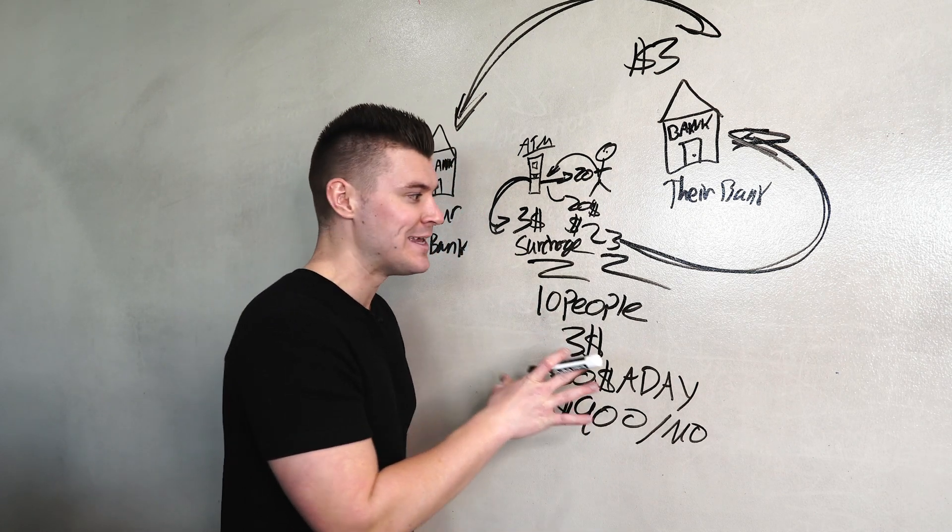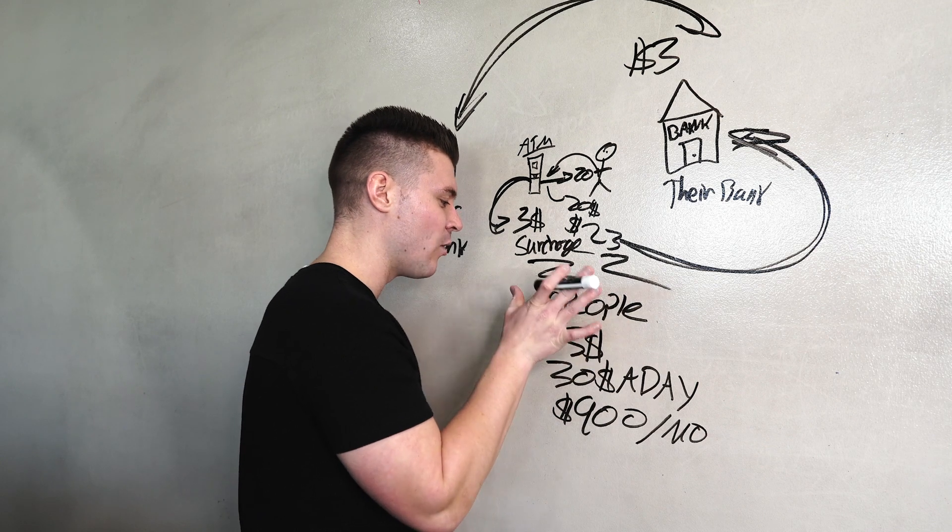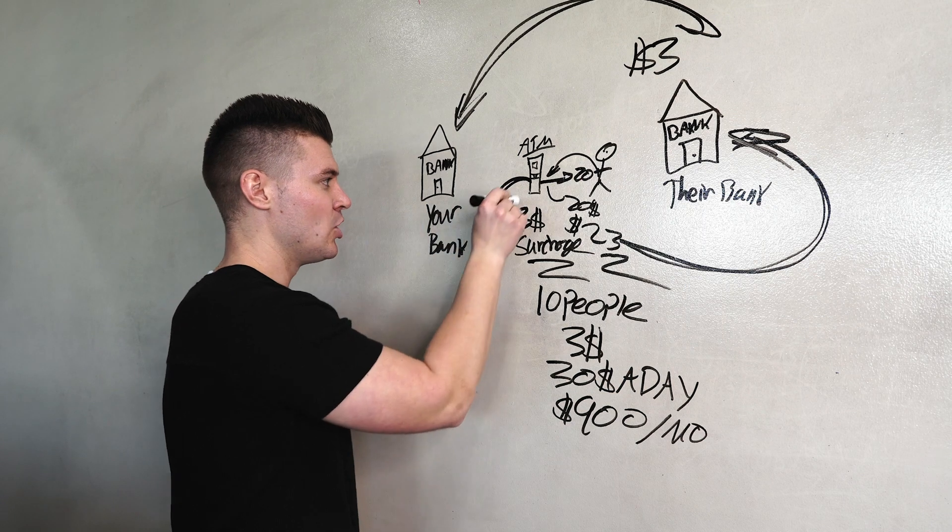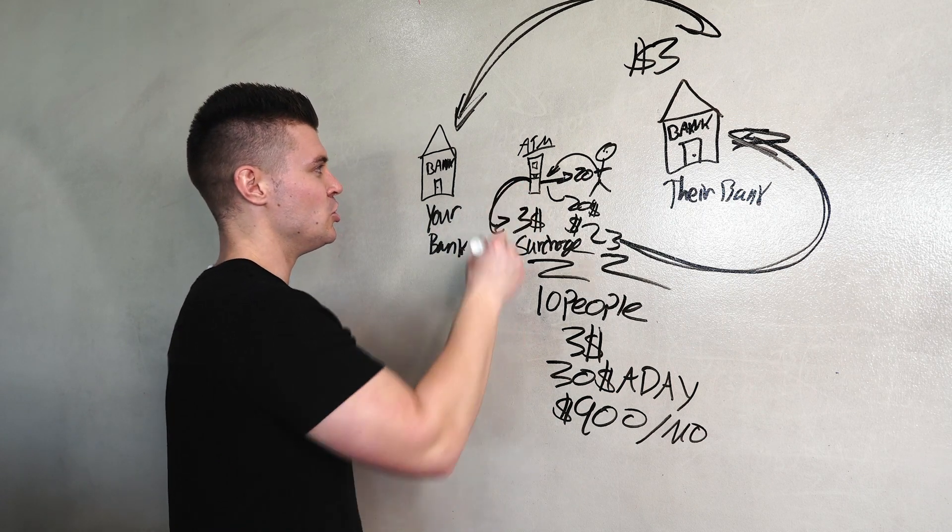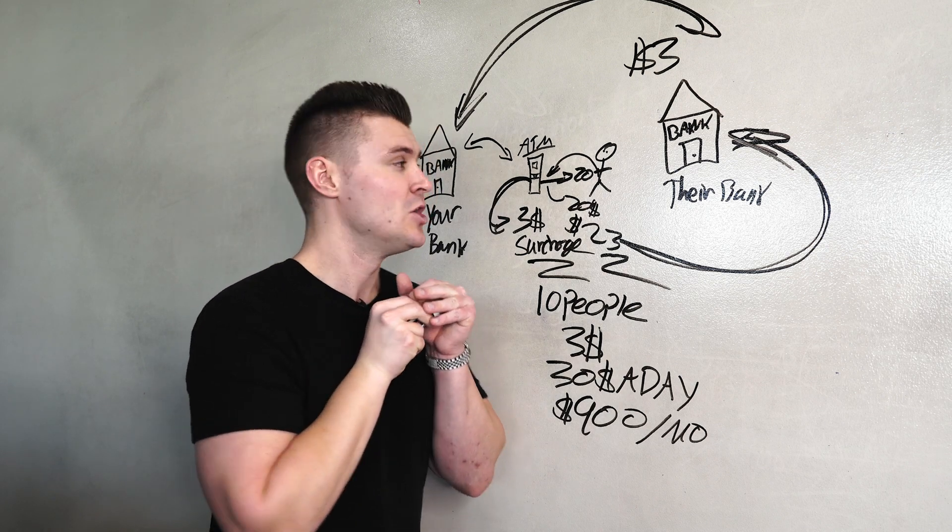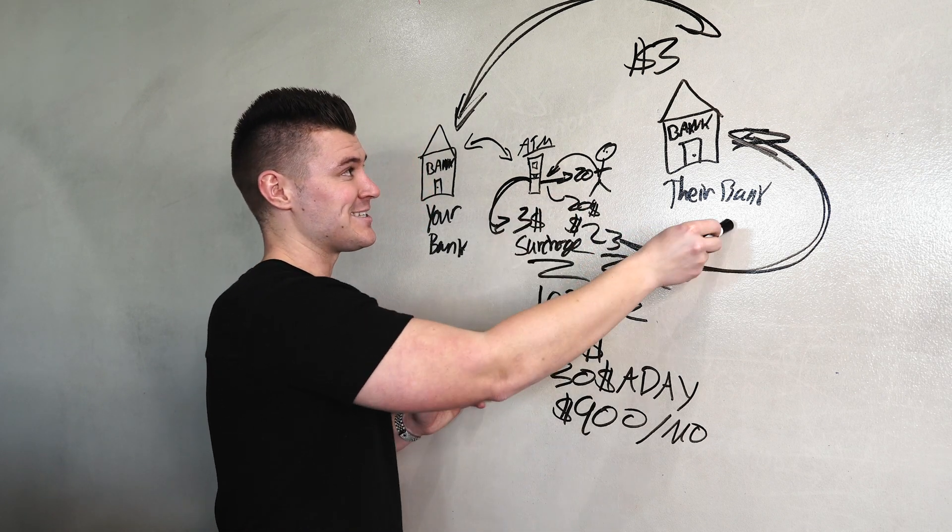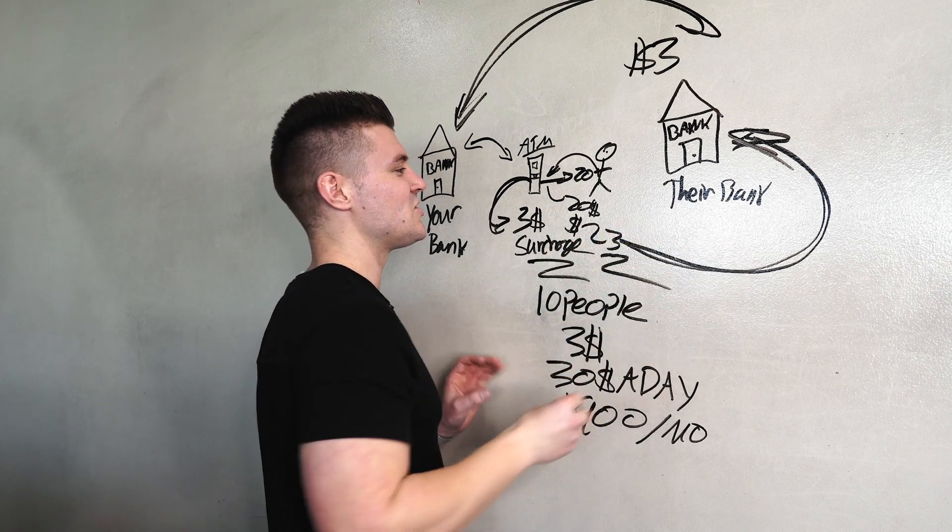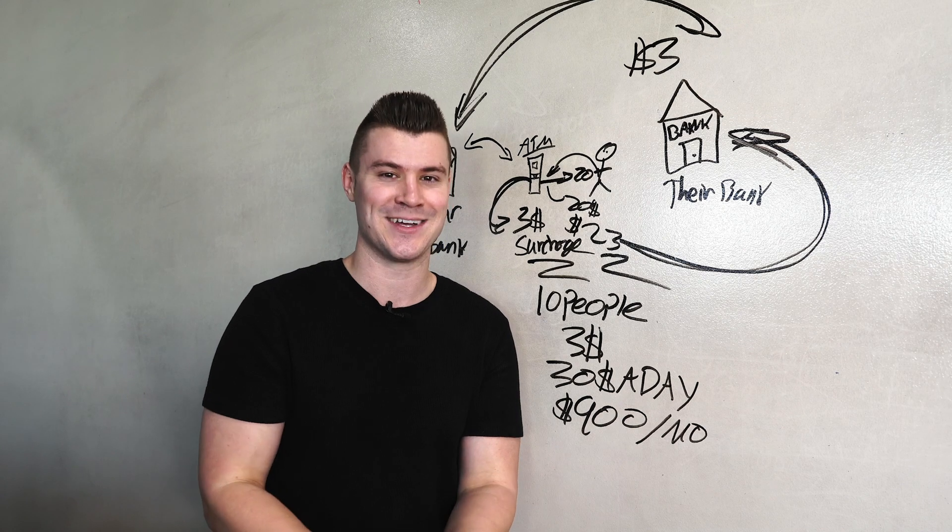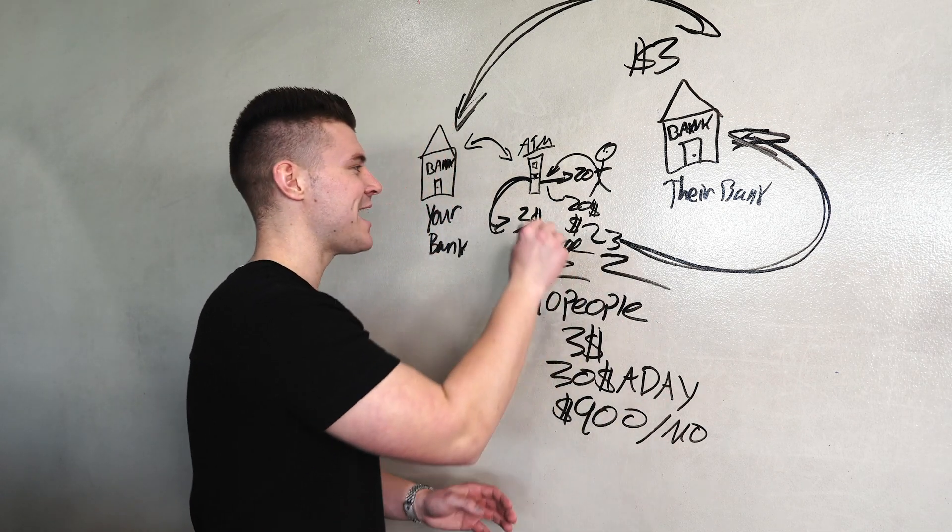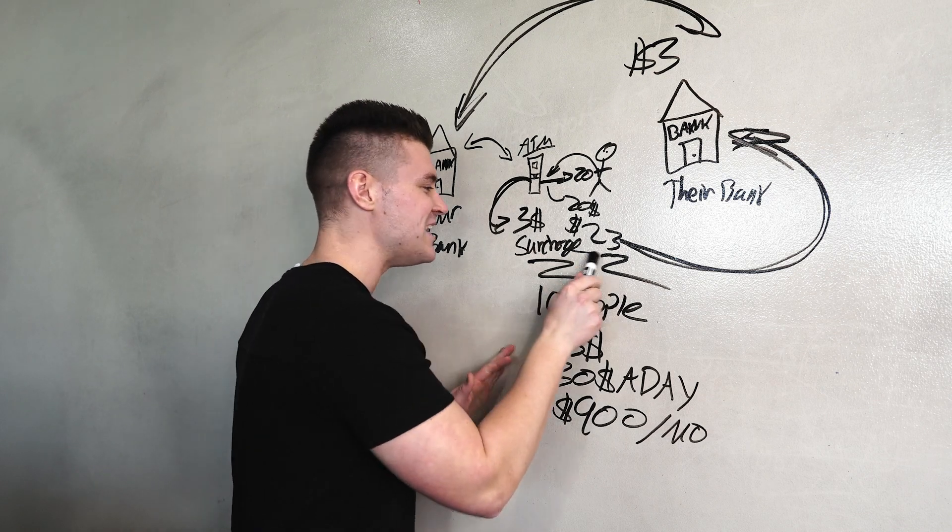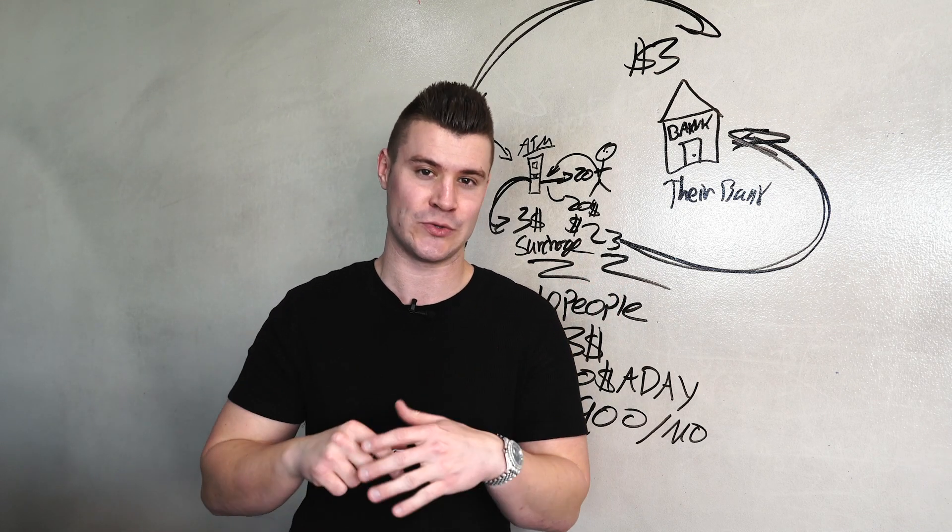Now for those of you that are like, what just happened? You went from a $3 transaction surcharge to now making $900 a month? Yes. This ladies and gentlemen is exactly how the ATM business works. Their bank, your bank, your ATM machine. Your ATM machine is tied to your bank. Your bank is tied to your ATM machine. So for every $20 that gets taken out or for every, let's just say they took out $80, it would still charge them what? $83.